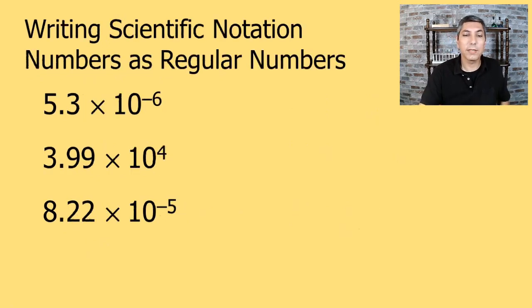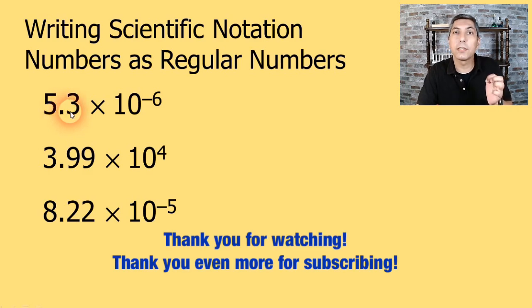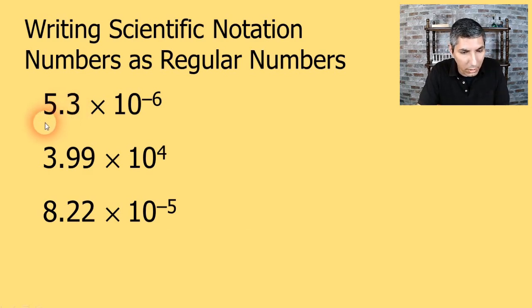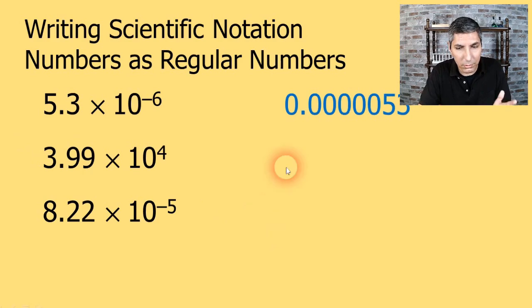How about the other direction? Can we write scientific notation numbers as regular numbers? Hopefully we can do that as well. 5.3 times 10 to the negative sixth. Well, that means it's a very small number since it's a negative exponent. So we're going to move this over to the left, and then the rest of those will have to have zeros as placeholders. So it's 0.000053.